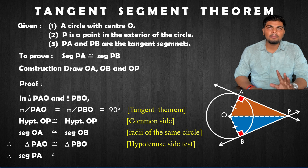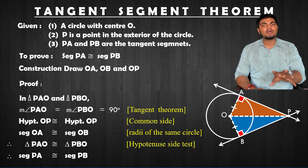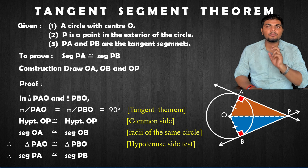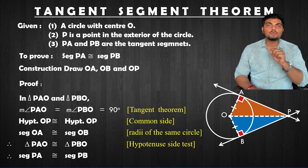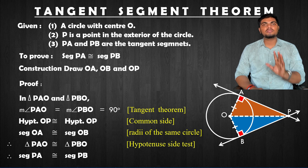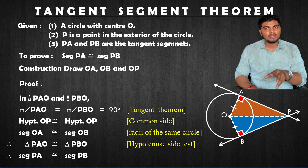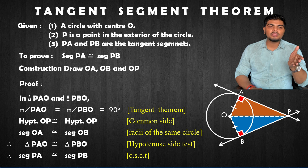I will prove that segment PA is congruent to segment PB. I have to prove both segments. This was my theorem, which says that the two segments drawn from an exterior point of a circle, which touch the circle at a single point, will be equal or congruent. This was proved by CSCT.